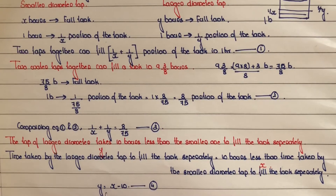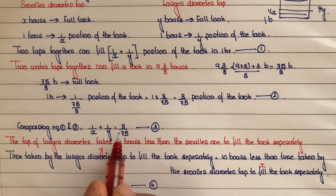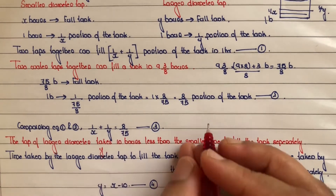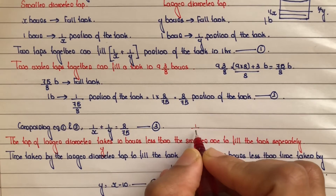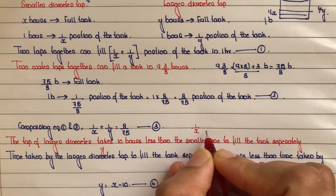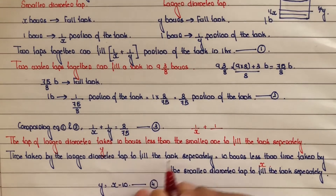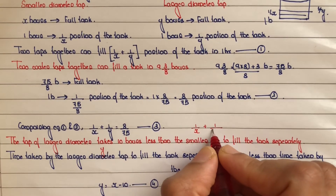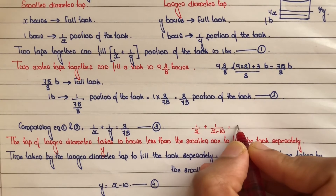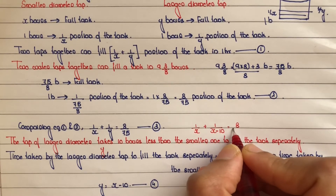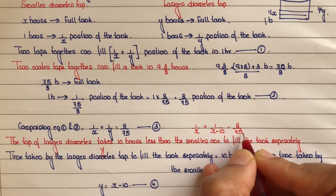Next step: substitute y equal to x minus 10 from equation number 4 into equation number 3. That gives 1 by x plus 1 by x minus 10 is equal to 8 by 75.